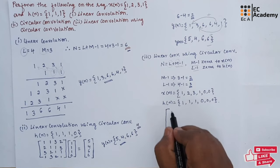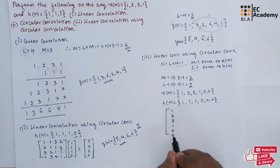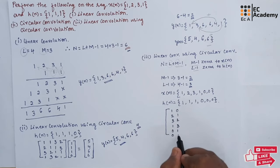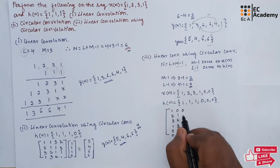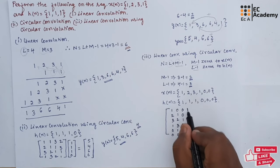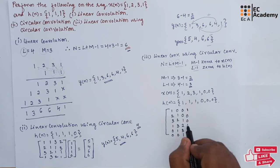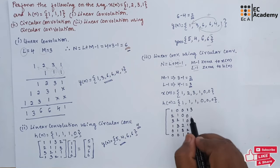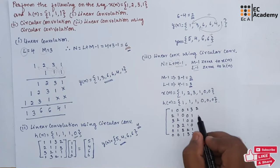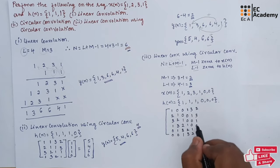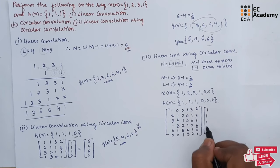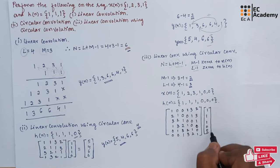Let us write x of n in matrix form: row 1 is 1, 2, 3, 1, 0, 0; row 2 starts with 0: 0, 1, 2, 3, 1, 0; row 3 starts with 0, 0: 0, 0, 1, 2, 3, 1; row 4 starts with 1: 1, 0, 0, 1, 2, 3; wait — row 4 starts with 3: 3, 1, 0, 0, 1, 2; row 5 starts with 2: 2, 3, 1, 0, 0, 1. We multiply this with h of n which is 1, 1, 1, 0, 0, 0.